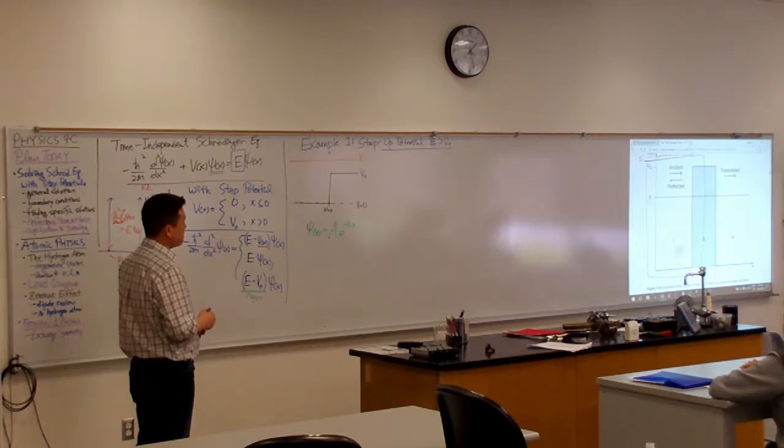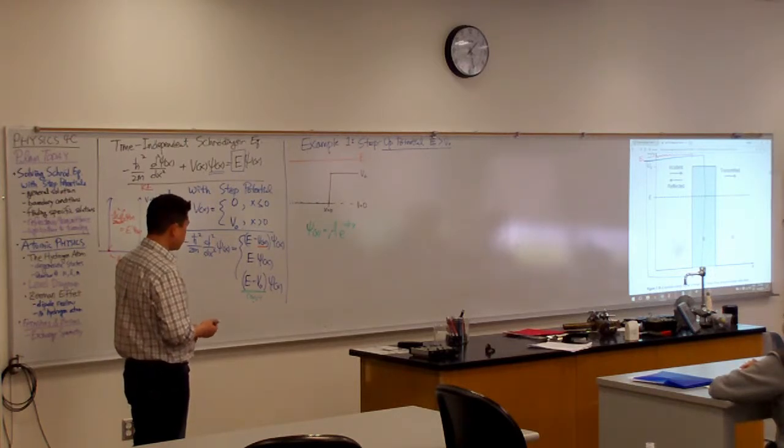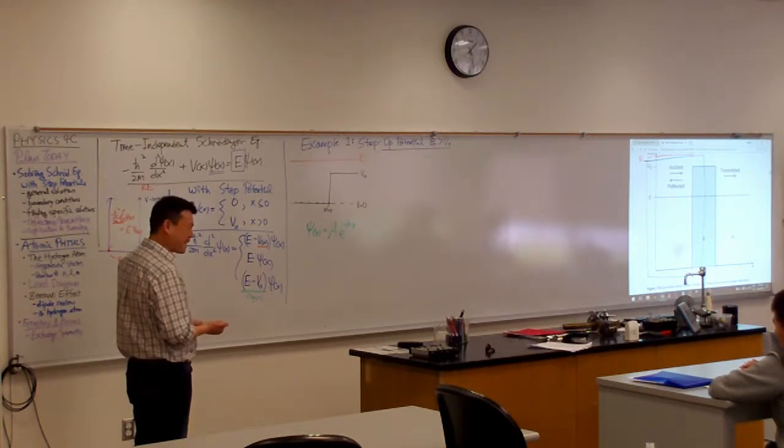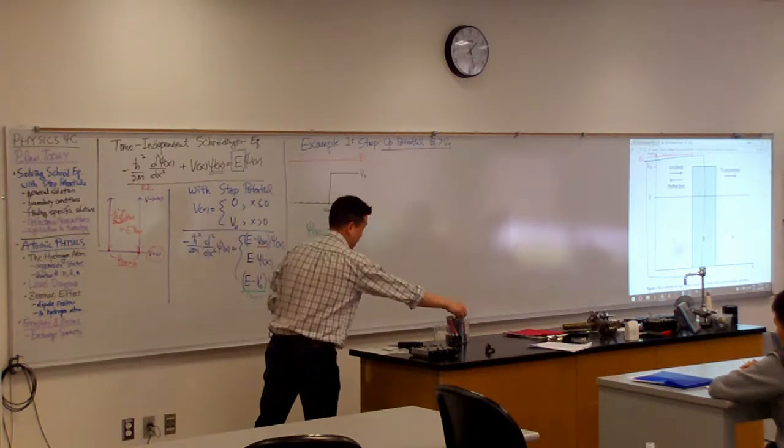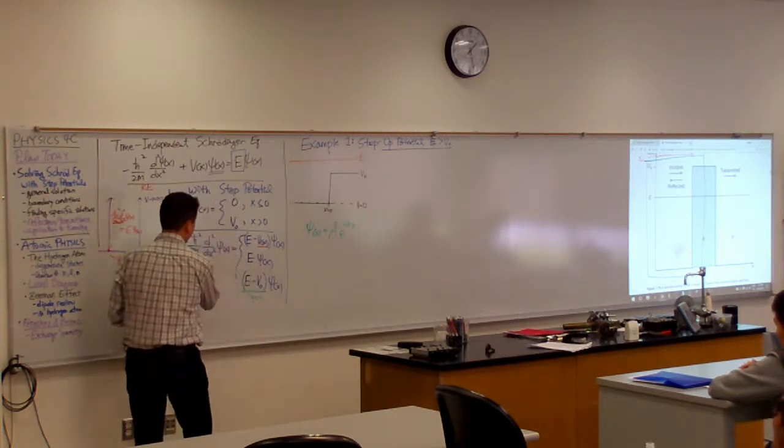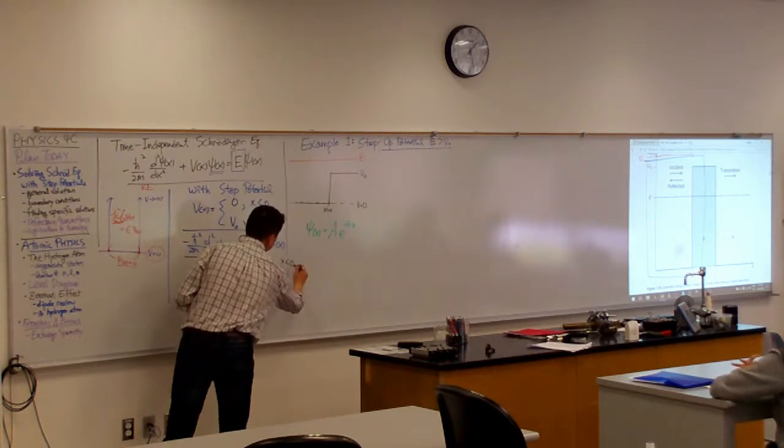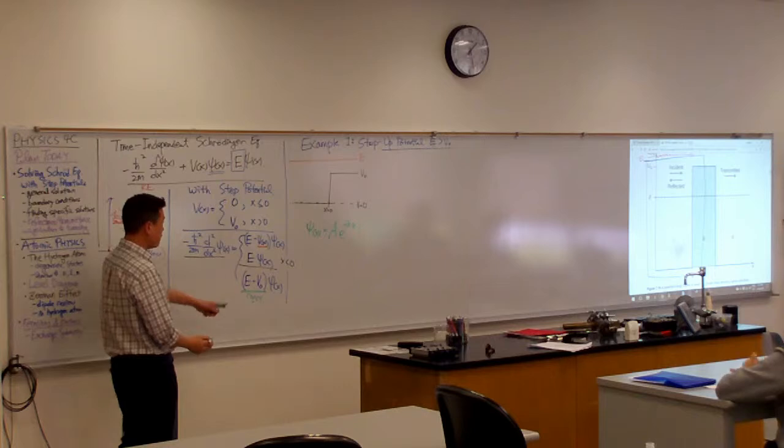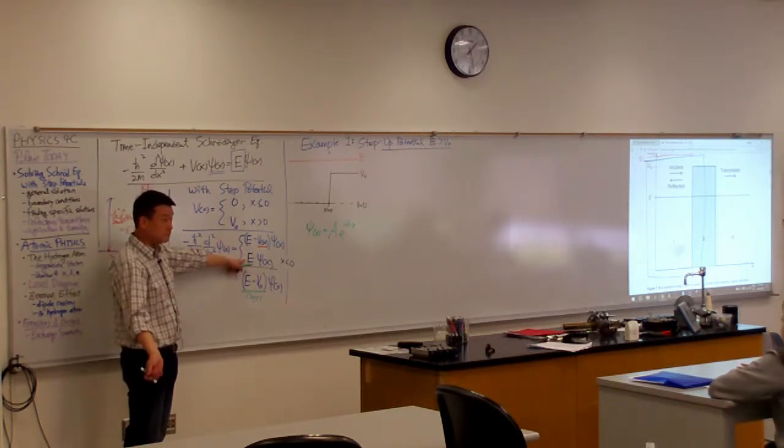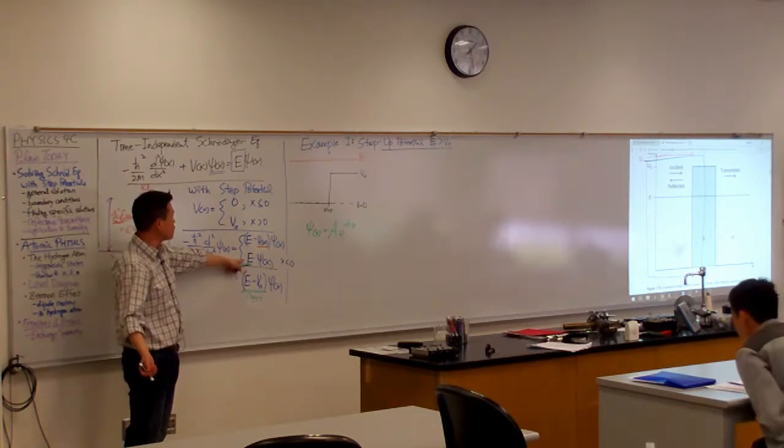So there's a barrier here. It's really that you are actually dealing with two equations. You have one equation that works for x less than 0, where potential is 0.